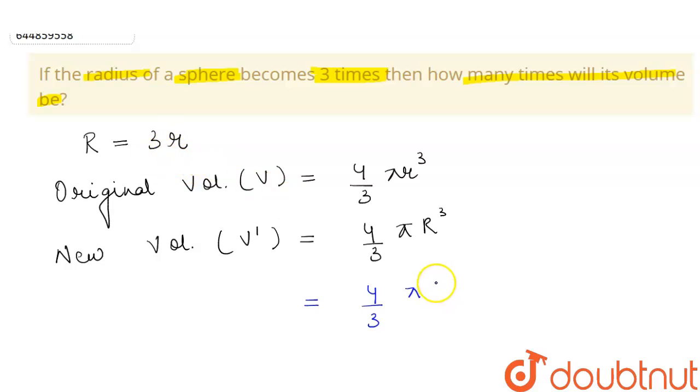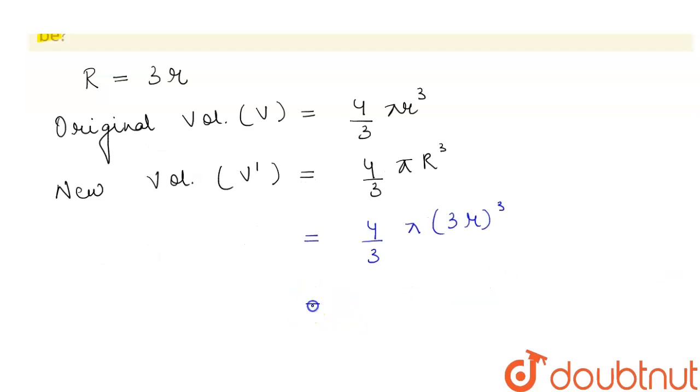And if we put the value of capital R to be 3r, this will become 3r cube. And solving this, we will get this to be equal to four by three pi. And we know that the value of 3 cube is 27.